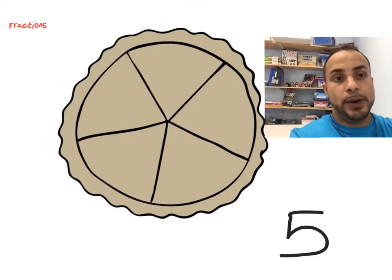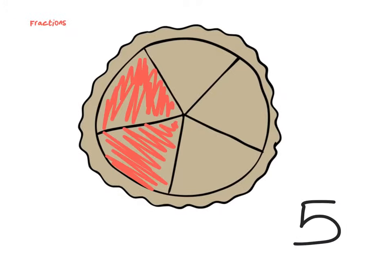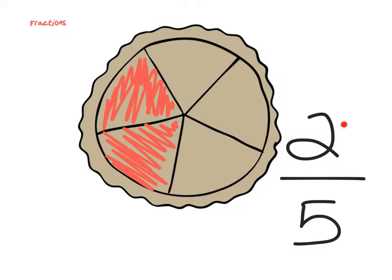Now let's say that two of the slices in the pie are strawberry slices. We could say that two slices out of the five slices — or two fifths — are strawberry slices. So on the top we have the part, which is just this part. And on the bottom, we have the whole.